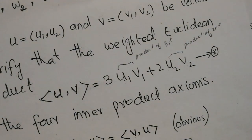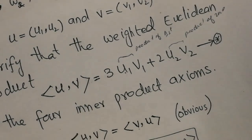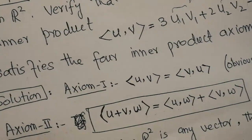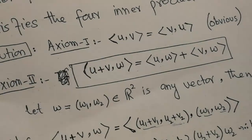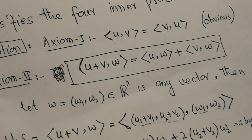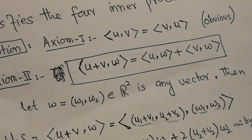All products satisfying these four axioms are called inner products, and those that do not satisfy them are not. This concludes this lecture. In the next lecture, I'll discuss orthonormal vectors and the Gram-Schmidt process to convert ordinary vectors into an orthonormal basis. Till then, Allah Hafiz.